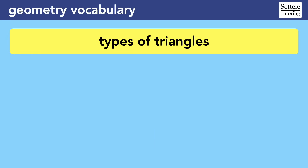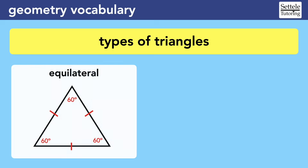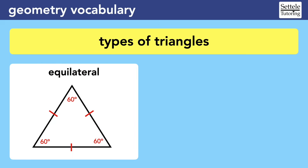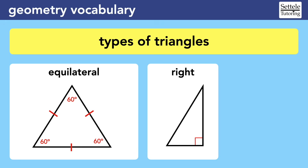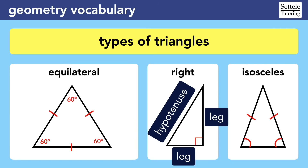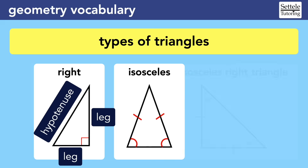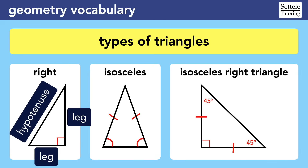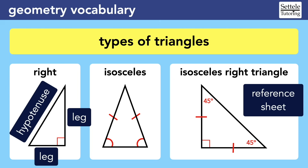There are specific types of triangles that you also need to be aware of. An equilateral triangle has three equal sides and three equal angles, all of which are always 60 degrees. A right triangle has a right angle; the side opposite the right angle is known as the hypotenuse, and the other two sides are called legs. An isosceles triangle has just two equal sides, and those sides are always opposite two equal angles. As a bonus, an isosceles right triangle is always the special 45-45-90 right triangle, and the formulas for this are given on the SAT reference sheet.